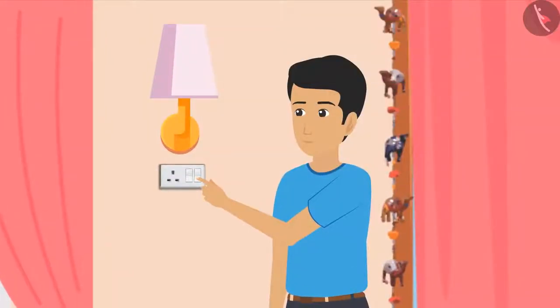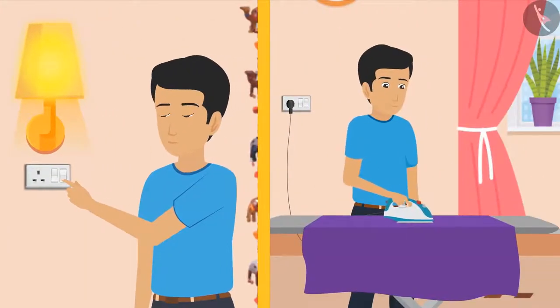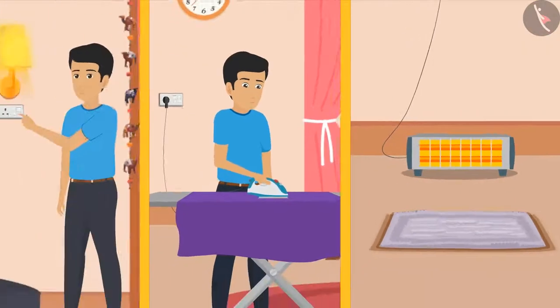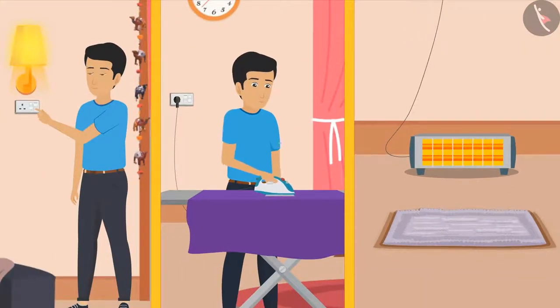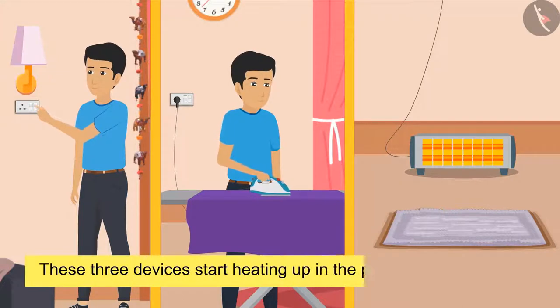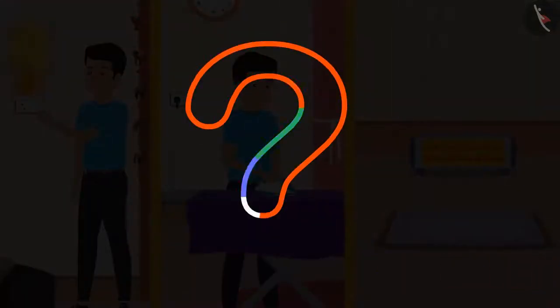We know that bulbs brighten our room, the hot iron is used to iron our clothes, as well as the heater helps to keep our rooms warm. If you look at all these devices, one thing will be common with all these three devices: they start heating up in the presence of electricity.